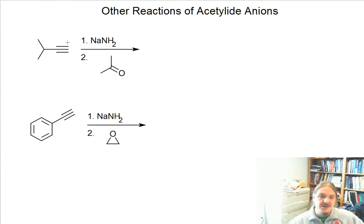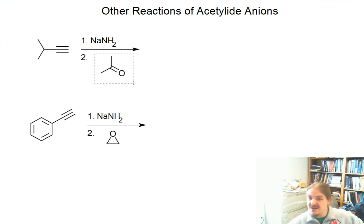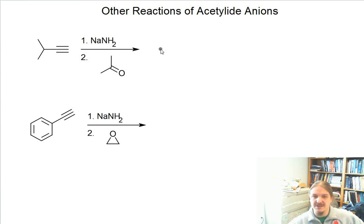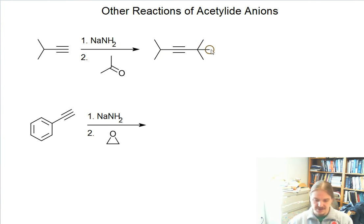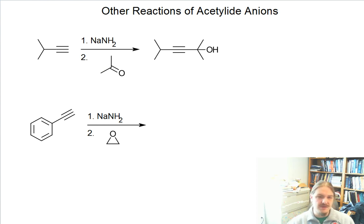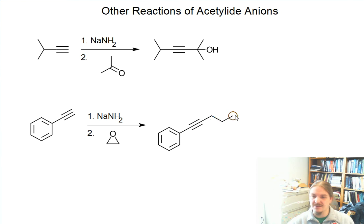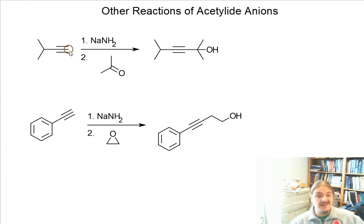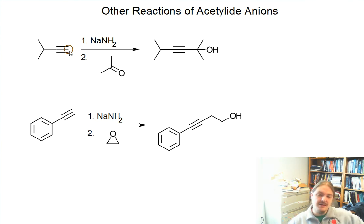The last thing I want to briefly show you is that acetylide anions are good nucleophiles for other kinds of reactions with electrophiles. You're going to learn in a few videos that carbonyl compounds and epoxides — these three-membered ring ethers — are also really good electrophiles for many kinds of reactions. Once you've studied reactions of those functional groups, it should not be a big surprise that acetylide anions can react with them as well. Generally, anytime you need a good nucleophile, you can use the acetylide anion. In the next video, we're going to talk about another way to make alkynes, starting with alkenes or with dihalides. Thank you for watching.